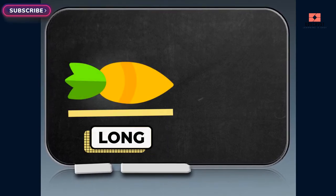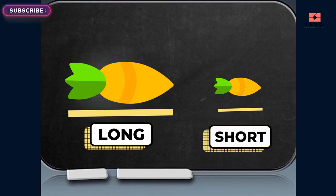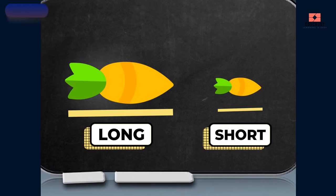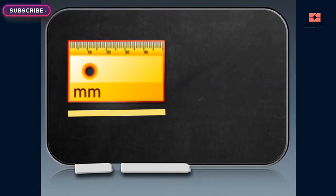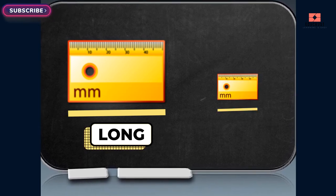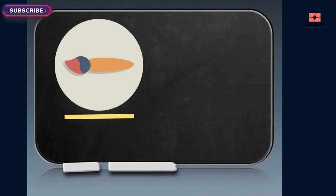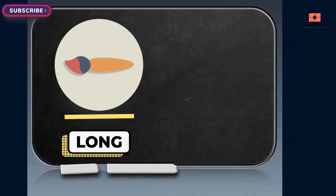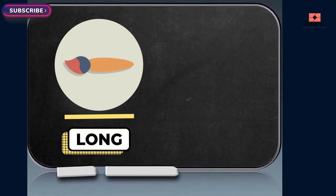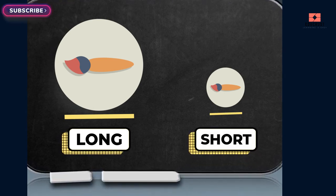A carrot on your left is long, whereas the carrot on your right is short. A ruler on your left is long, whereas the ruler on your right is short. A color brush on your left is long, whereas the color brush on your right is short.